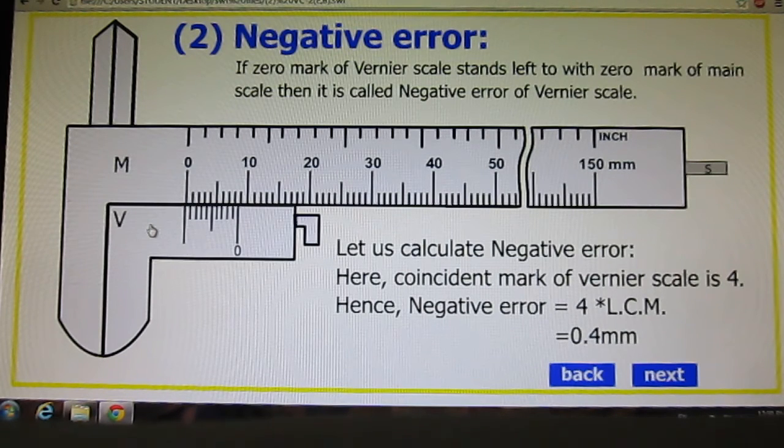So there is negative error. Let us see how much negative error is there. Coincident mark of Vernier scale is four. Yes, it is here. Hence negative error is four into least count measurement, that is 0.4mm.